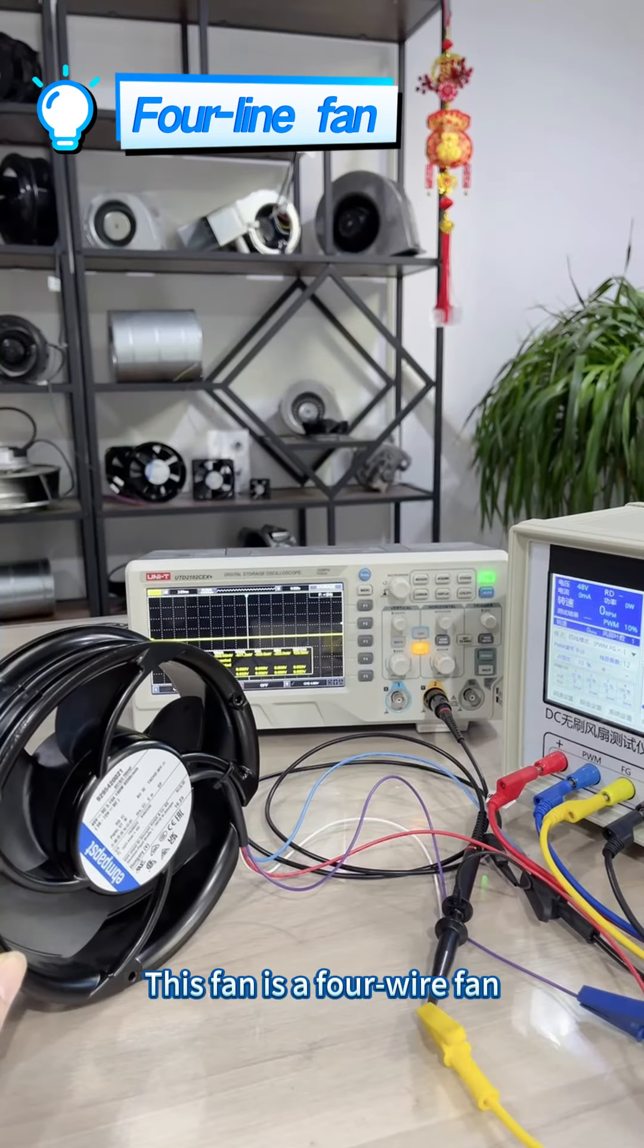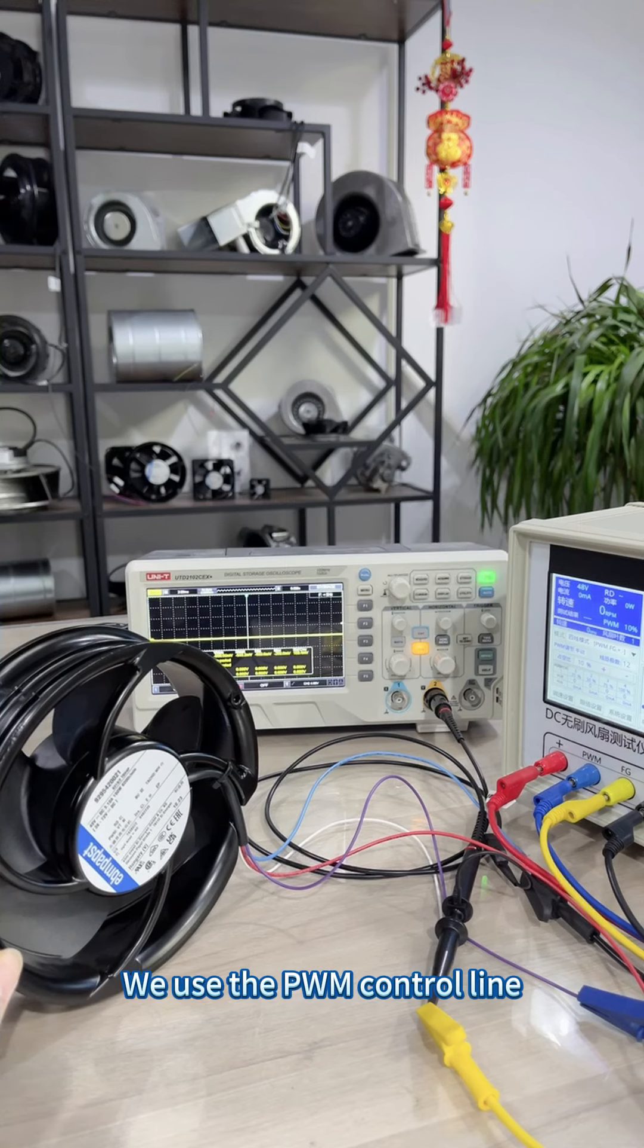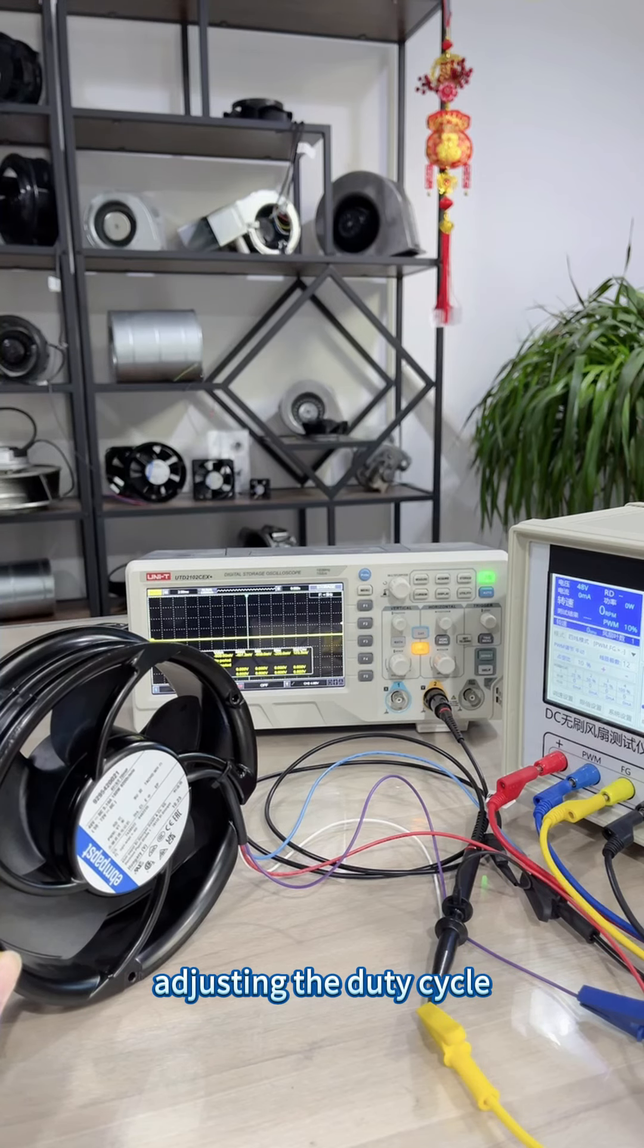This fan is a four wire fan, including power line, PWM control line, and PID feedback line. We use the PWM control line to adjust the fan speed by adjusting the duty cycle.